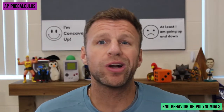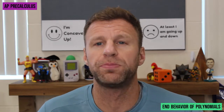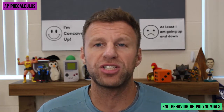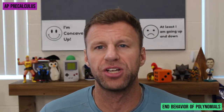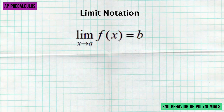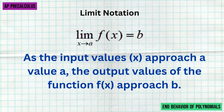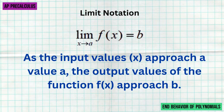The only thing that's really new is how we're going to notate the end behavior of these non-constant polynomial functions — we're going to use what's called limit notation. Limit notation looks like this: we have lim representing the limit of our function as x approaches a value a, and the answer is what the output values of the function are doing — in this case, they're approaching b. So reading this limit notation, we're saying as the input values x approach a value a, the output values f of x approach b.